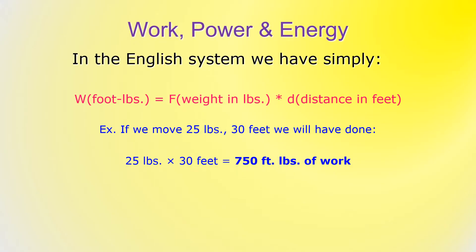In the English system, the work in foot-pounds equals the force or weight in pounds times the distance in feet. For example, if we move 25 pounds 30 feet, then we will have done 25 pounds times 30 feet, or 750 foot-pounds of work.